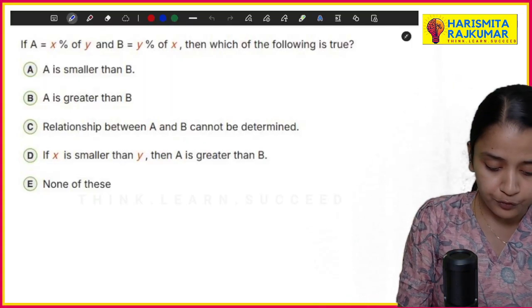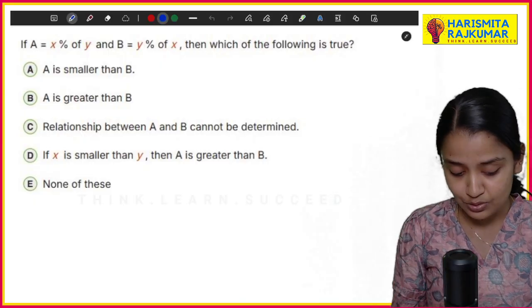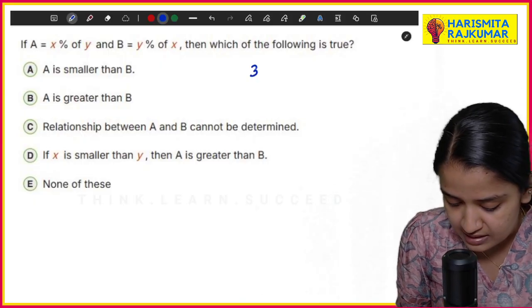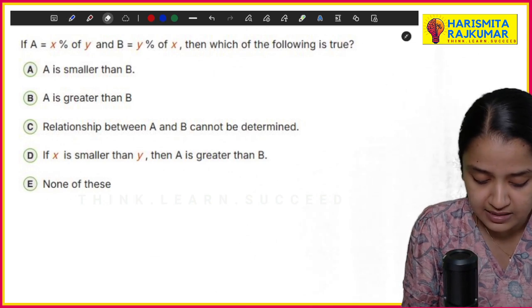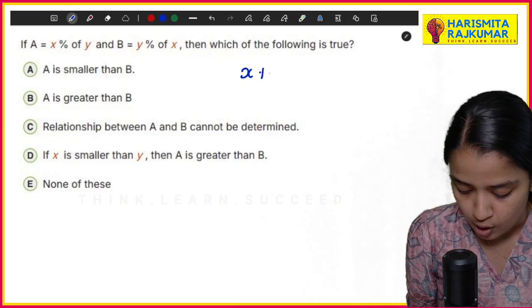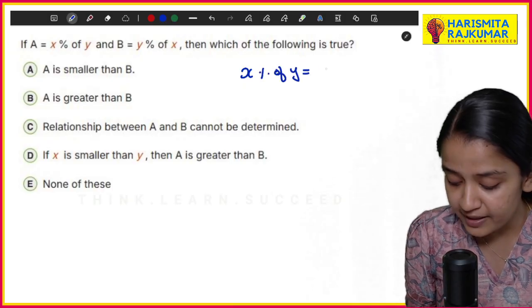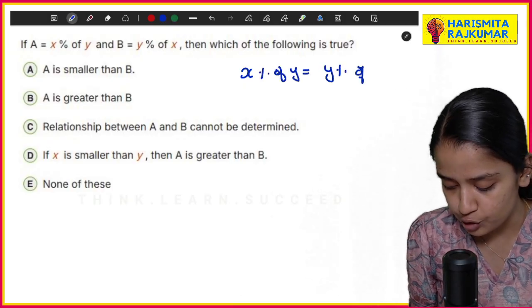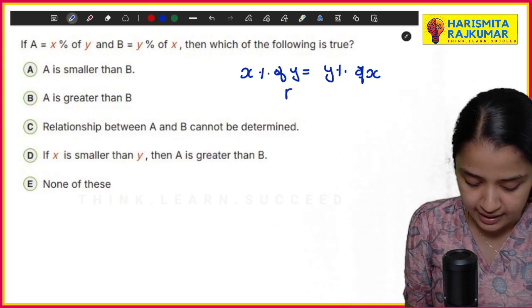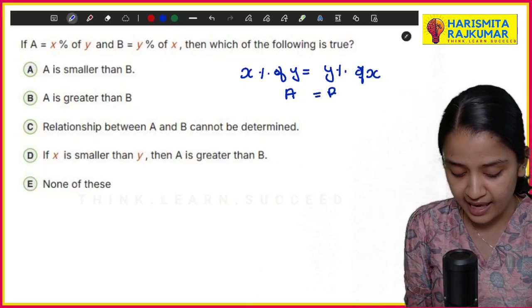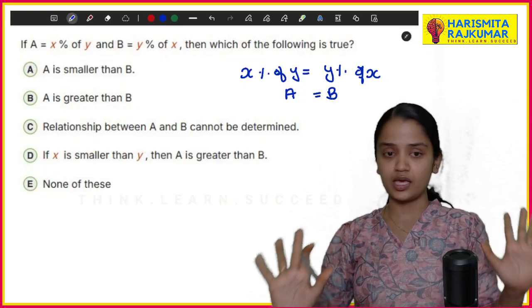So property one, if you know, you will be able to answer this question. Property one says that x% of y will be equal to y% of x, which means basically according to the question, A = B.